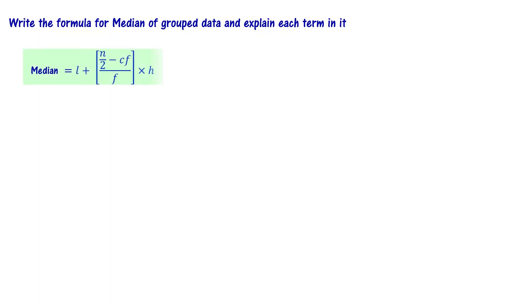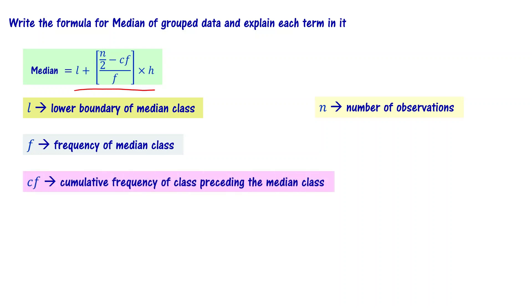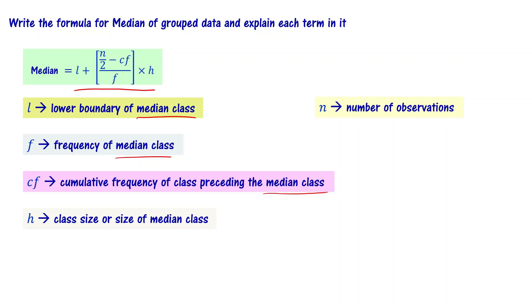Write the formula for median of grouped data and explain each term. Median of grouped data: Median = L + (N/2 − Cf) / F × H. Here, L is the lower boundary of the median class, N is the number of observations, F is the frequency of the median class, Cf is the cumulative frequency of the class preceding the median class, and H is the class size.